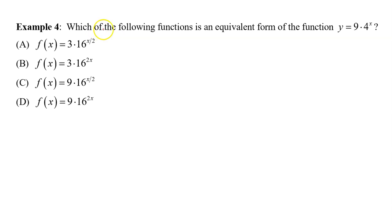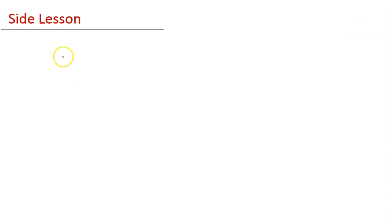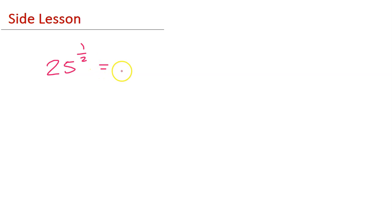Example 4: Which of the following functions is an equivalent form of the function y equals 9 times 4 to the x power? Quick side lesson: you know that 25 to the 1 half power is the same thing as the square root of 25.